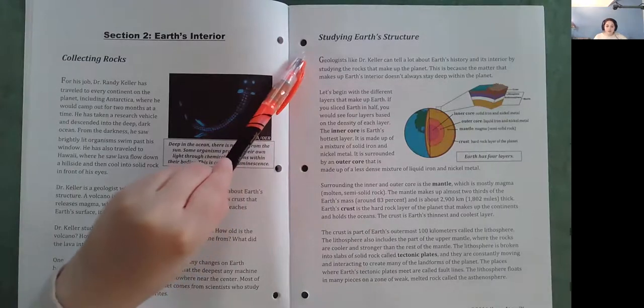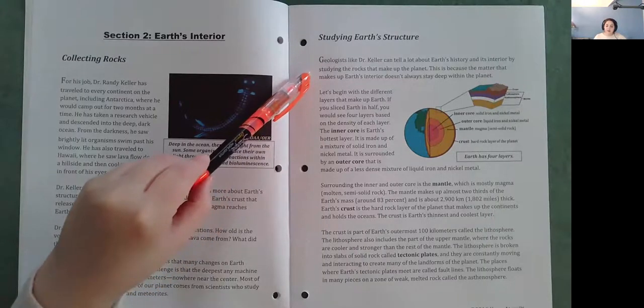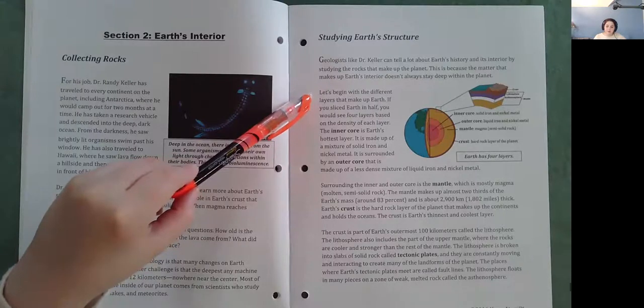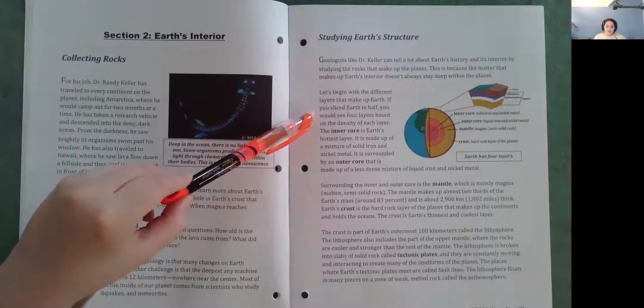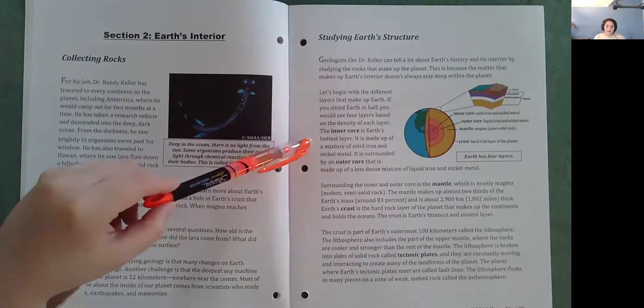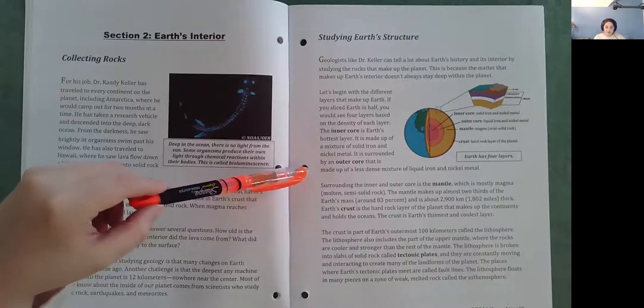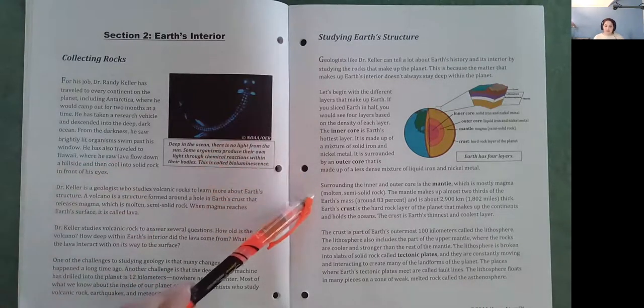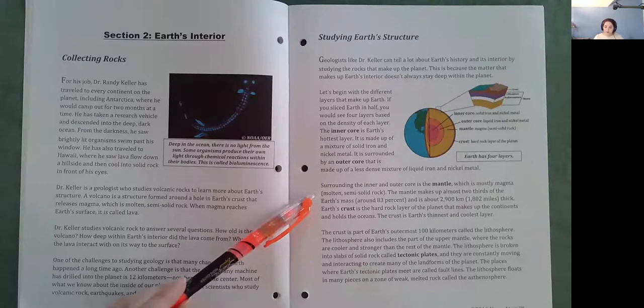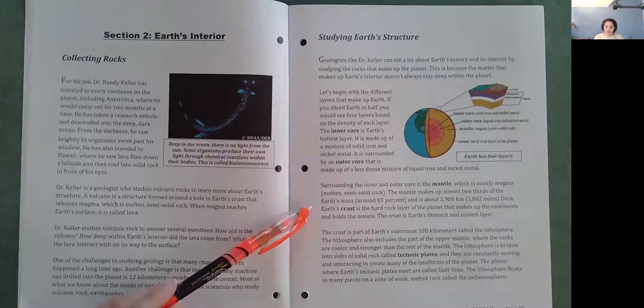Studying Earth's structure. Geologists like Dr. Keller can tell a lot about Earth's history and its interior by studying the rocks that make up the planet. Let's begin with the different layers that make up Earth. If you slice Earth in half, you would see four layers based on the density of each layer. The inner core is Earth's hottest layer. It is made up of a mixture of solid iron and nickel metal. It is surrounded by an outer core that is made up of a less dense mixture of liquid iron and nickel metal. Surrounding the inner and outer core is the mantle, which is mostly magma, molten, semi-solid rock. The mantle makes up almost two-thirds of the Earth's mass, around 83%, and is about 2,900 kilometers or 1,802 miles thick.